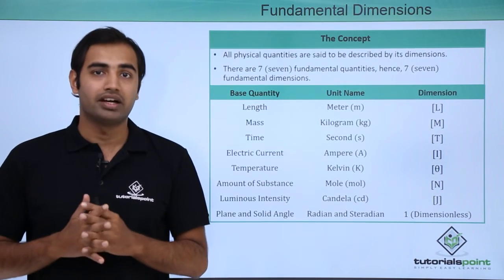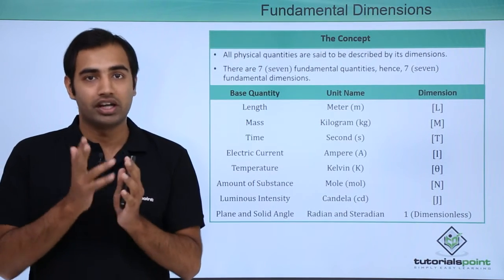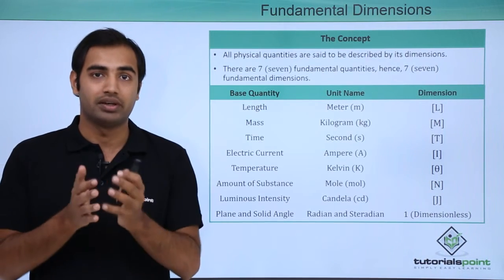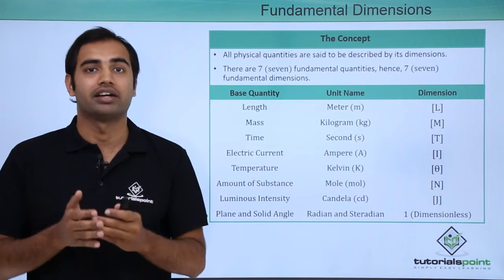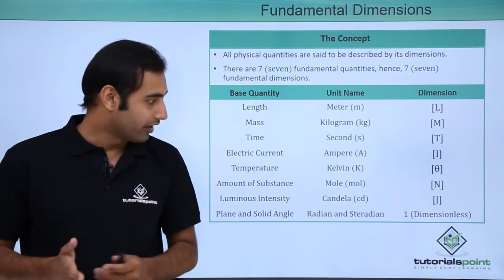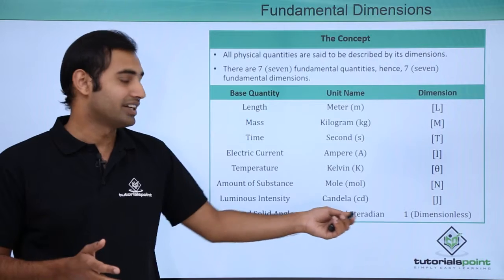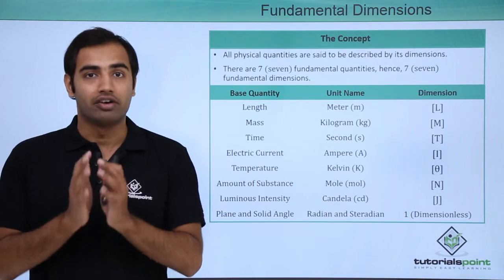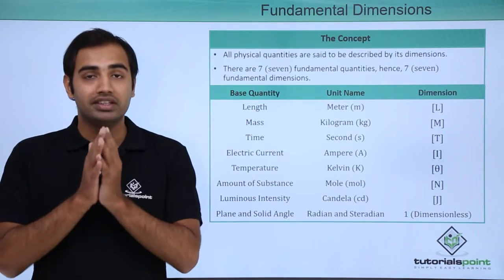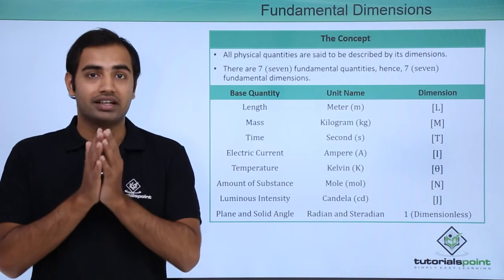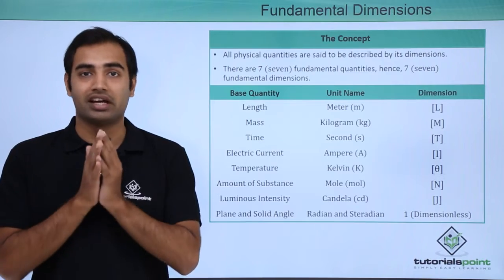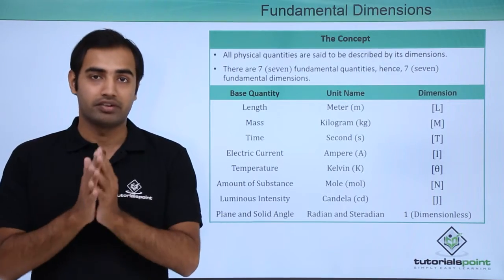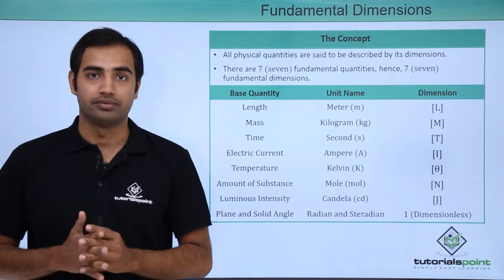Apart from that, in SI units, we have two other fundamental quantities which are plane angle and solid angle, defined having their units as radians and steradians. However, these quantities are dimensionless, or they have the dimension of 1. This must be very carefully noted.